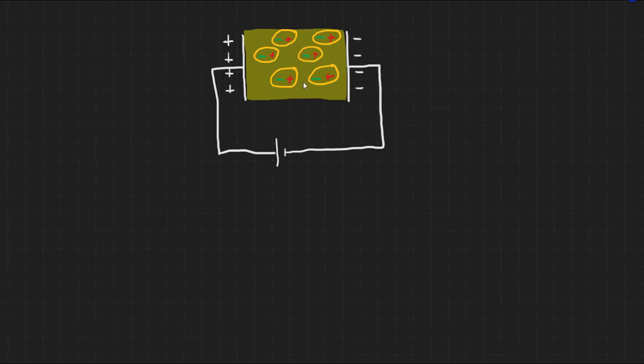The positive sides of the polarized dielectric molecules will attract more electrons flowing from the battery onto the negative plate. And the negative side of the polarized dielectric molecules will help to push electrons back to the battery from the positive plate.